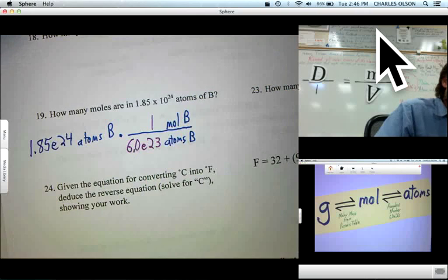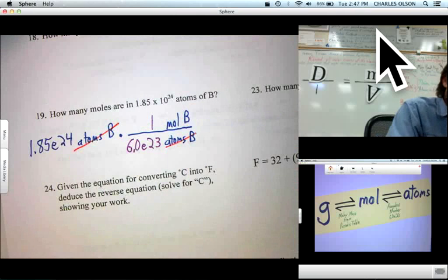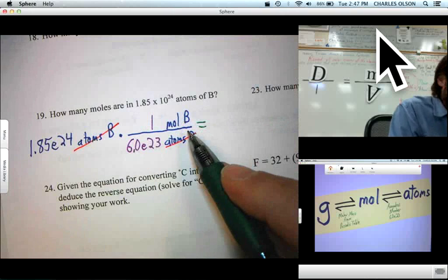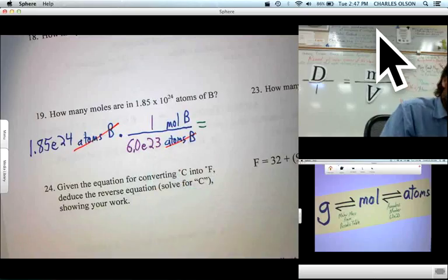And let's see. Atoms of boron cancels atoms of boron. We are left with moles of boron, which is what the question asked for. So, we just take our calculator. We do the math using our EE button.